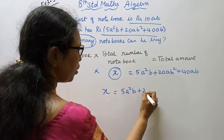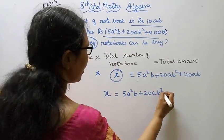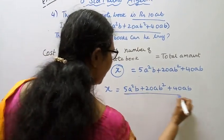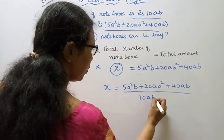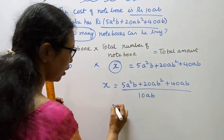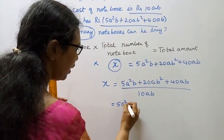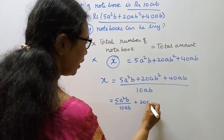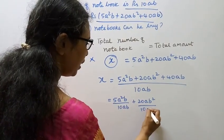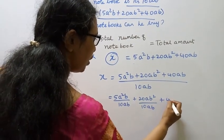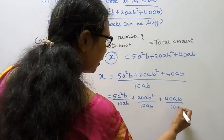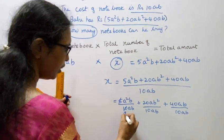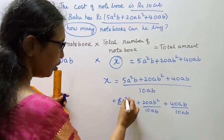5a²b + 20ab² + 40ab divided by 10ab. We can separate this: 5a²b by 10ab, plus 20ab² by 10ab, plus 40ab by 10ab.